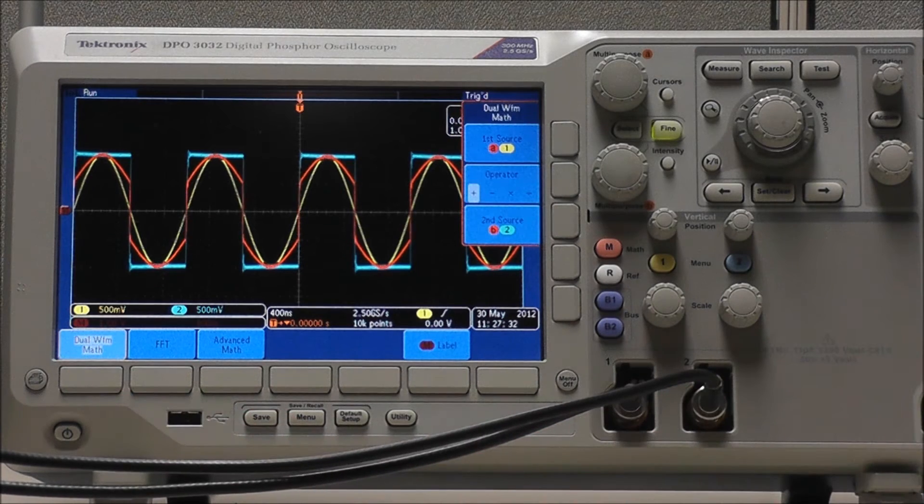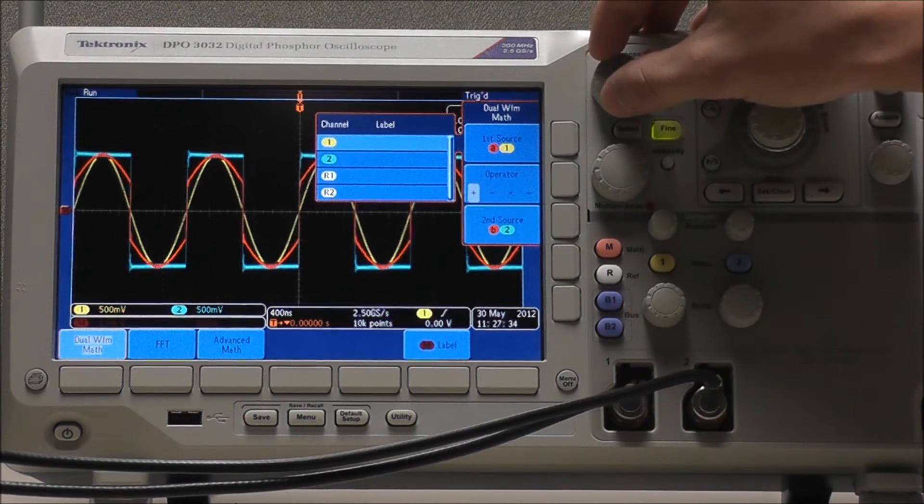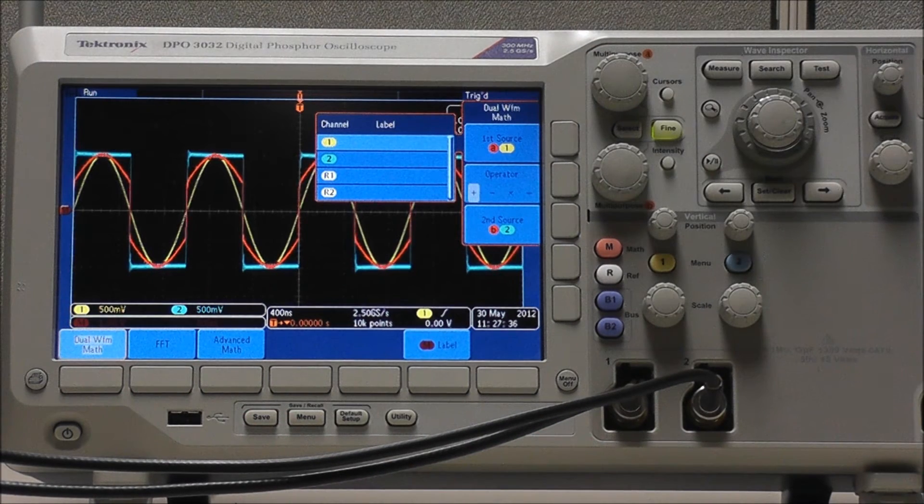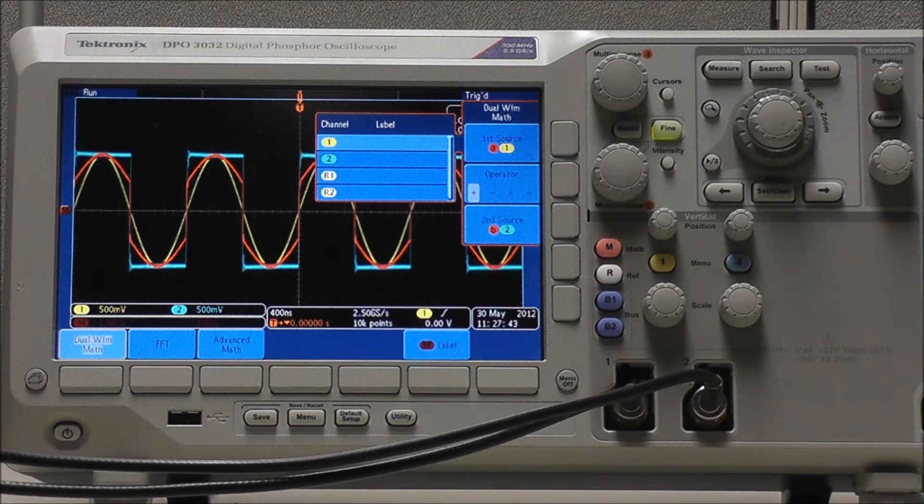Select dual waveform monitor math, and we can use multipurpose A to select our first source. We are given the option of selecting either of our channels, or we could even select one of our reference waveforms that we saved earlier. But for now we will select channel 1.